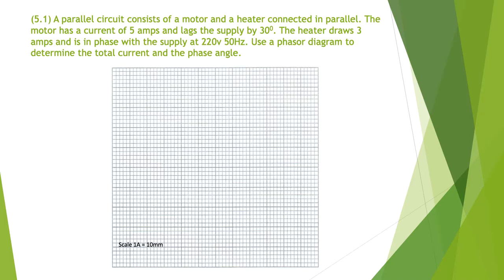Here 5.1, a parallel circuit consists of a motor and a heater connected in parallel. The motor has a current of five amps and lags the supply by 30 degrees. The heater draws three amps and is in phase with the supply at 220 volts. Use a phasor diagram to determine the total current and the phase angle.